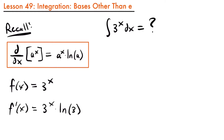Well, if we go back to our function here, f of x equals 3 to the power of x, notice that the derivative f prime of x contains that original function within it. 3 to the power of x is being multiplied by the natural log of 3, and 3 to the power of x is the original function that we took the derivative of. Remember that when you take the integral of a function, you are looking for a function whose derivative is that function in the integral — you are trying to find the anti-derivative.